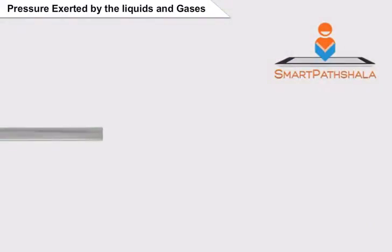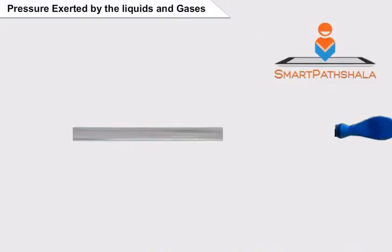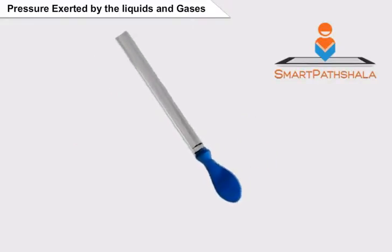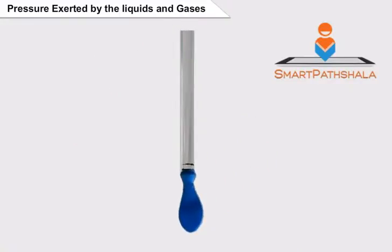Take a transparent plastic pipe and place a rubber balloon, stretching the rubber sheet tightly over one end of the pipe. Hold the plastic pipe vertically so that the rubber balloon is towards the bottom, and pour some water into the pipe. We observe the bulge in the rubber balloon.